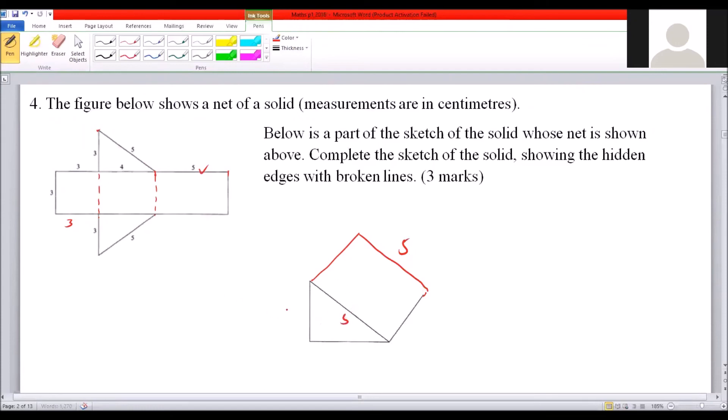This is a triangular side and you should be able to show the hidden lines. So this means that our figure, our solid, will be like that when you fold the sides. So this is the net and this is the solid that will be formed.